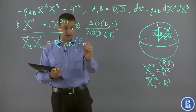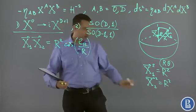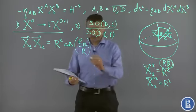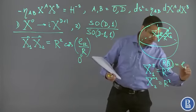This is nothing but the geodesic distance between these points divided by r. The cosine of this angle theta is just equal to l12 divided by r.